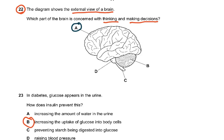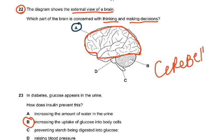That is this entire part which is called the cerebral cortex or the cerebrum. B is the cerebellum, which controls posture, coordination and balance. D looks like the medulla and C is the spinal cord.